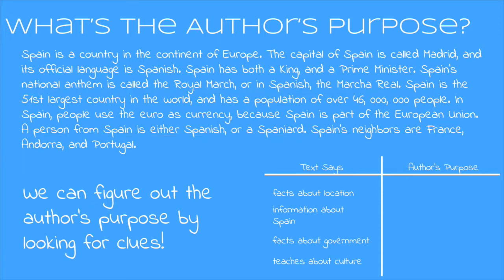Now we're ready to look at our graphic organizer and figure out what the author's purpose is. The text tells us there are facts about the location, information about Spain, facts about government, and it teaches us about culture. I have to ask myself: is the author trying to teach me something, or is the author trying to convince me of their opinion? If you said the author is trying to teach you something, you're exactly right. All of these facts and information are definitely trying to teach you what Spain is like.